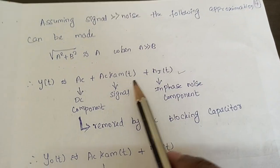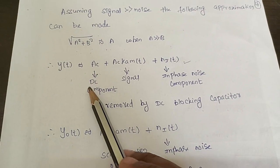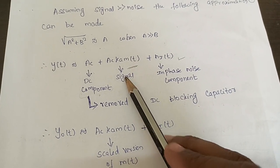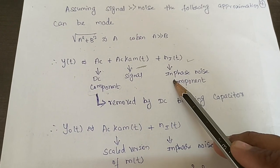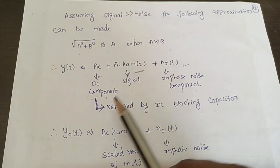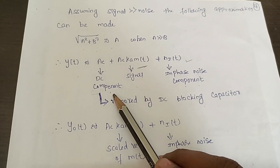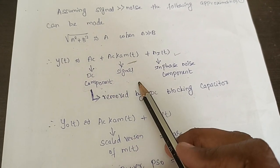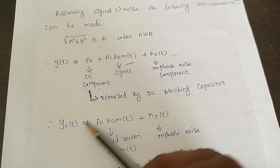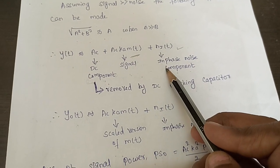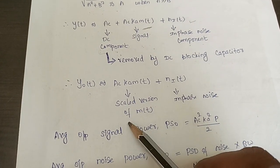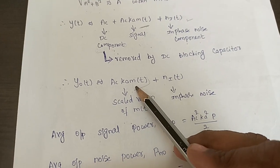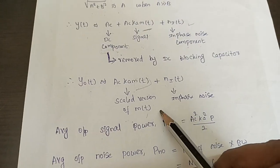When we apply Y of T as input to the DC blocking capacitor, the DC component is removed. At the output of the DC blocking capacitor, Y₀ of T has only two terms: the signal term AC × KA × M(T) and the in-phase noise component NI(T). The signal term is a scaled version of M of T, because it is multiplied by AC and KA, scaling its amplitude.